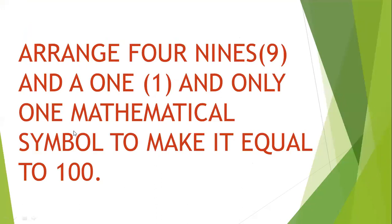The 2nd question is: arrange four 9s using only one mathematical symbol to make it equal to 100. The answer is 100. What do we do? Number 9 is used 4 times. Number 1 is used one time. How many mathematical symbols do we need to make it?